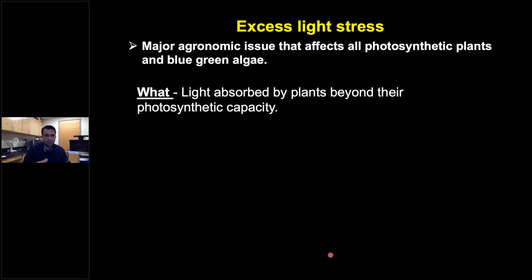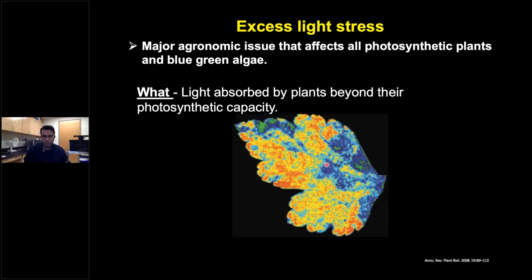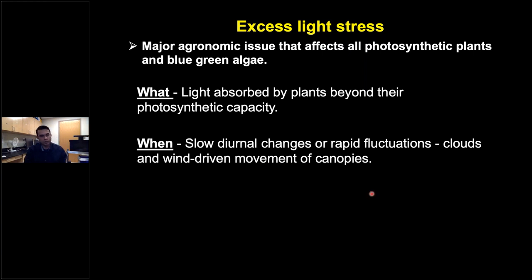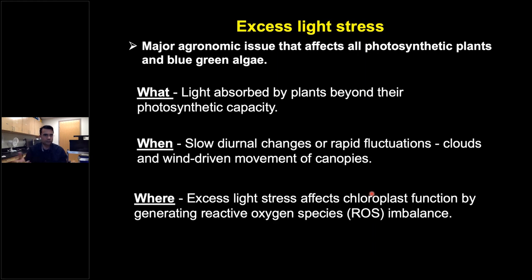This picture of a Japanese sanimon leaf shows remarkable heterogeneity in photosynthetic output — blue areas denoting low photosynthetic output versus red areas showing high output — because some areas are suffering from excess light absorption. Excess light stress occurs during slow diurnal changes or rapid fluctuations like cloud movement or wind-driven canopy movement, and it affects chloroplast function by generating reactive oxygen species through a process called photoinhibition.